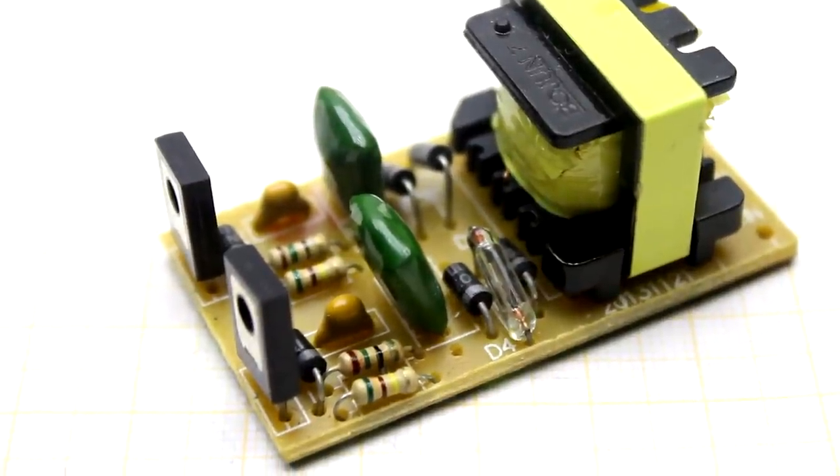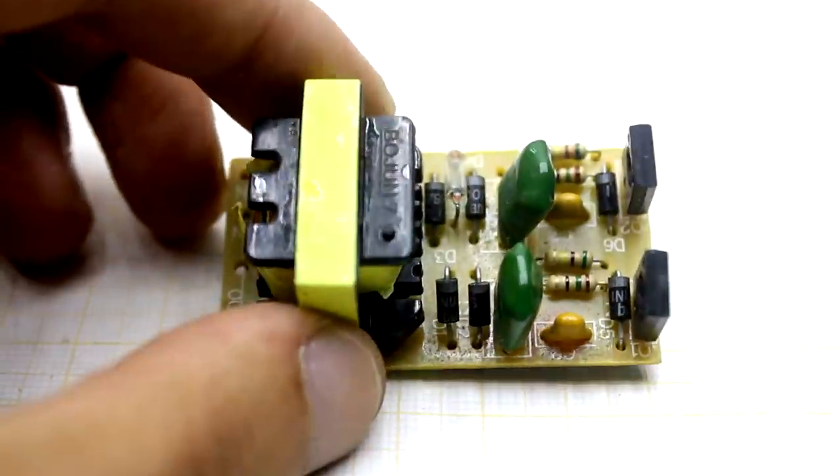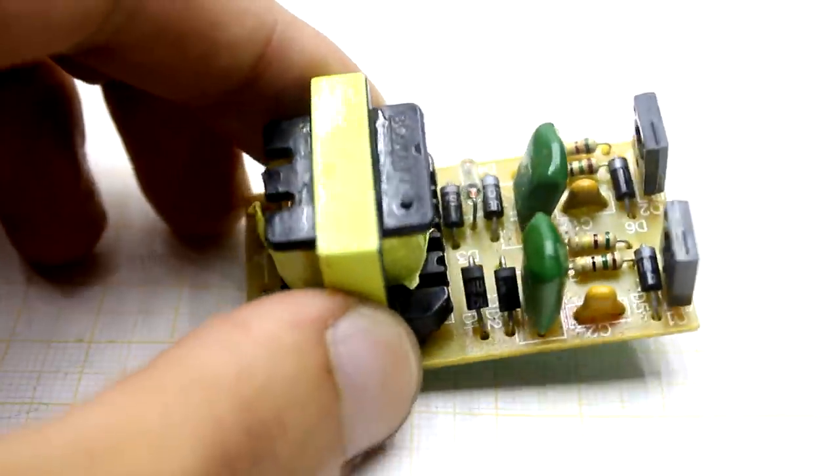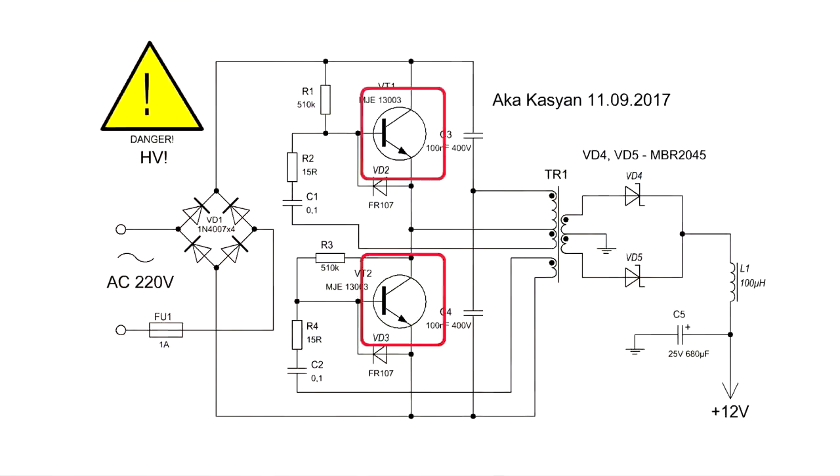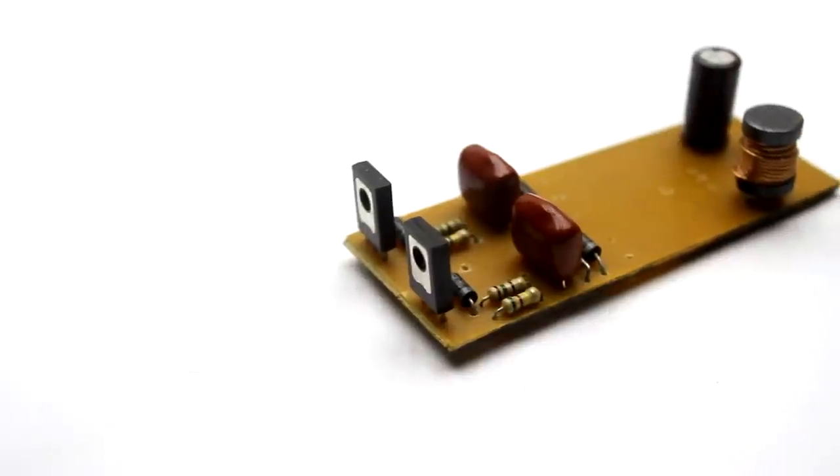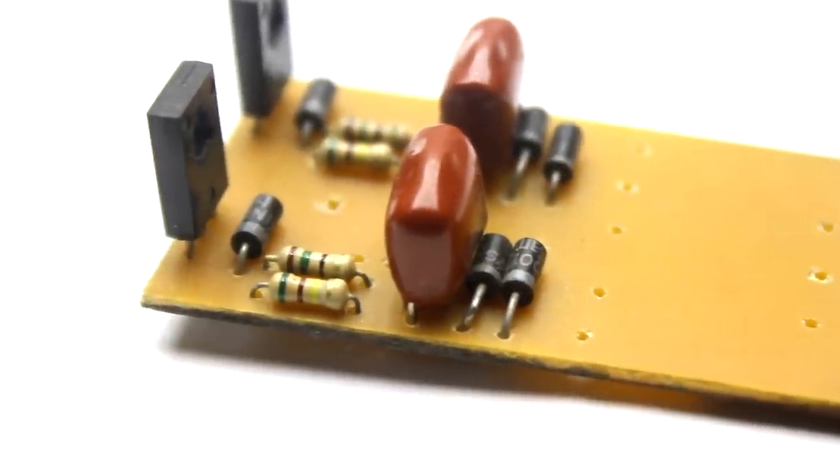The circuit is very simple. The transformer doesn't need precise calculation. A few words about the components. Two transistors are from MJE line. You can use MJE13001, 003, 005. No sense to use more powerful ones.